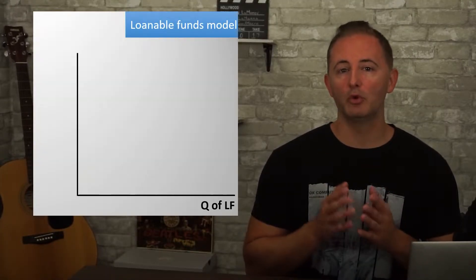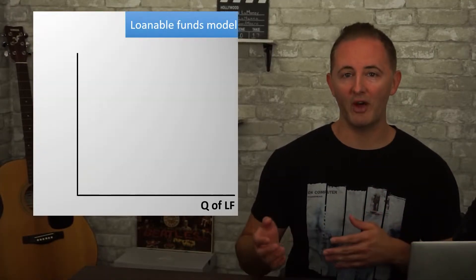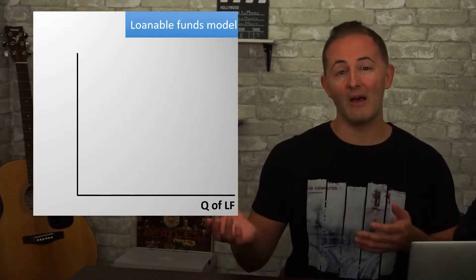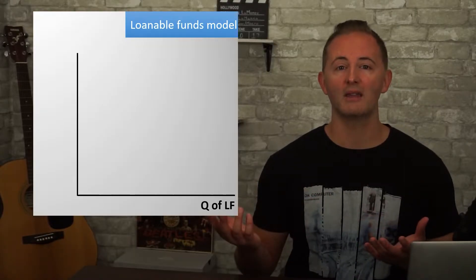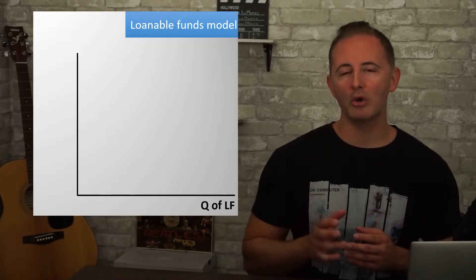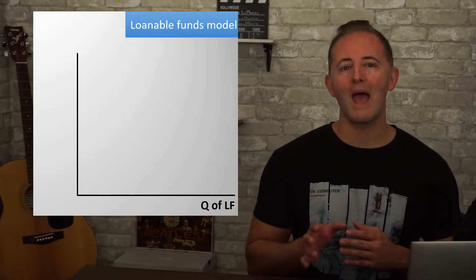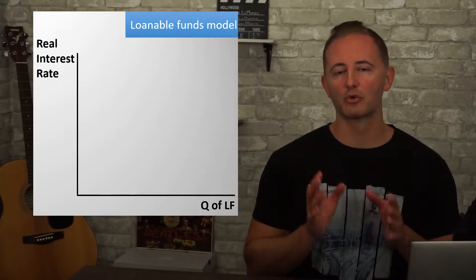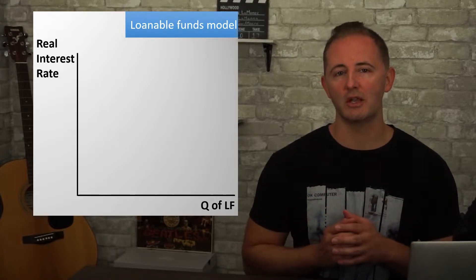Our x-axis is labeled quantity of loanable funds — Q of LF is totally fine, that's how I'll label it. Importantly, the y-axis is the real interest rate.